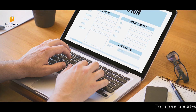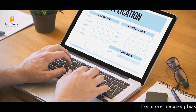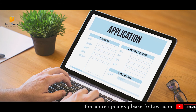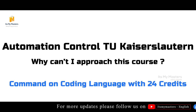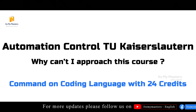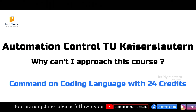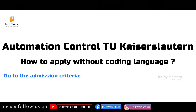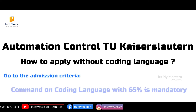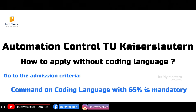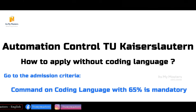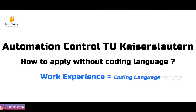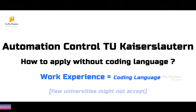For Automation and Control, mechanical students have been considering applying, and many students ask why they can't apply for this course. In the master's program, if you have not obtained 24 credits from automation and control subjects, you cannot qualify. Also, if you don't have a coding language background, check the admission criteria carefully. If it states that 65% coding knowledge is mandatory, you must have it. Some universities consider one year of working experience as coding knowledge, but others do not.